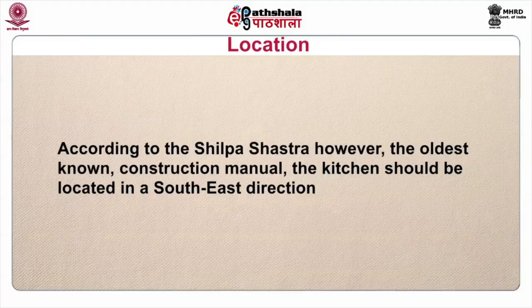According to the Shilpa Shastra, the oldest known construction manual, the kitchen should be located in a south-east direction. The placement direction for internal structures for stoves, doors, windows, etc. is also mentioned. A corner location provides two side walls for windows and free access to air and natural light, and also makes it accessible by road for receiving supplies and removal of kitchen waste. The kitchen should be situated above ground to avoid flooding, drainage backflow and unnecessary expenses on artificial lighting and ventilation. In basement areas, humidity and heat make kitchens prone to dampness and infestation.